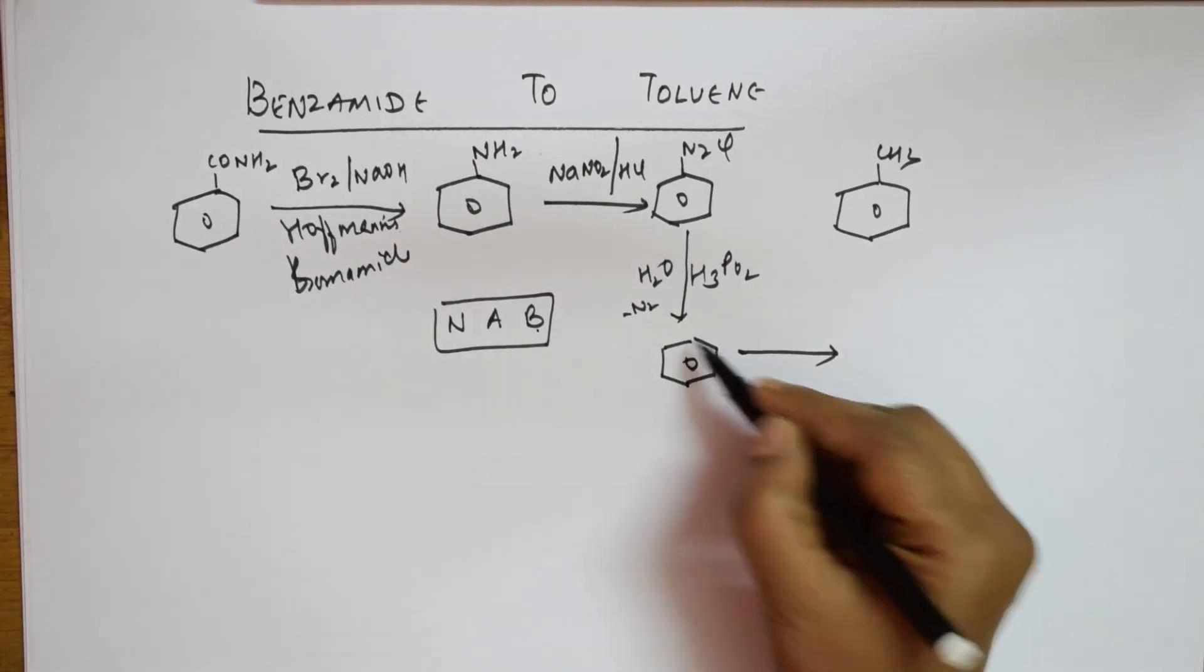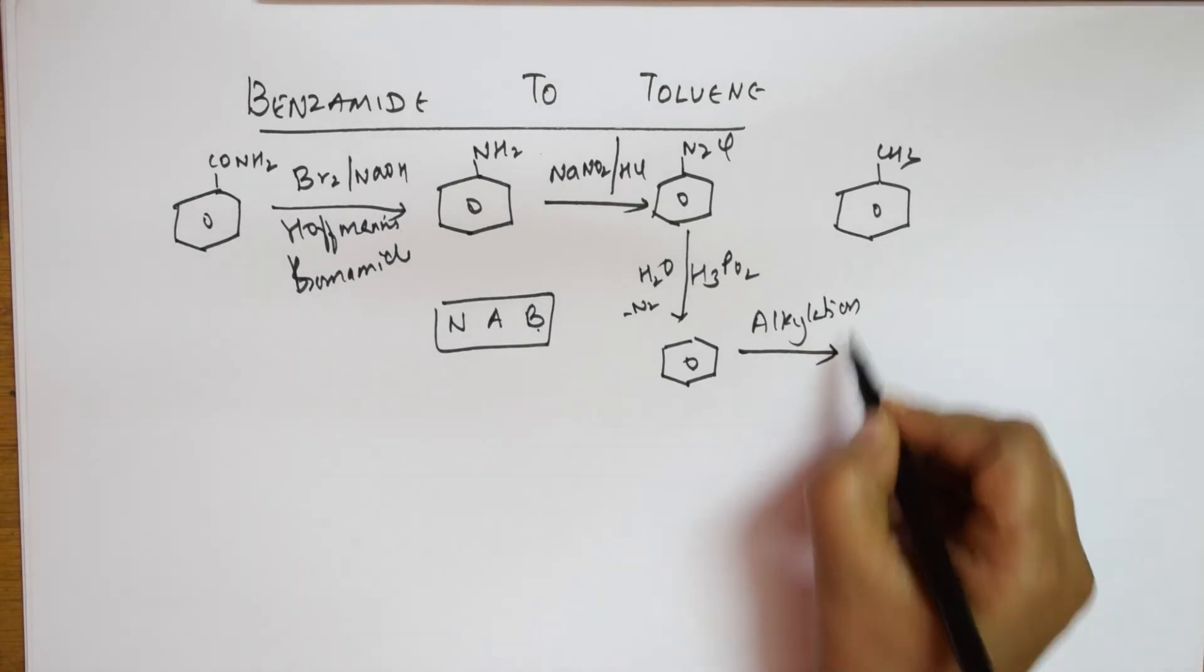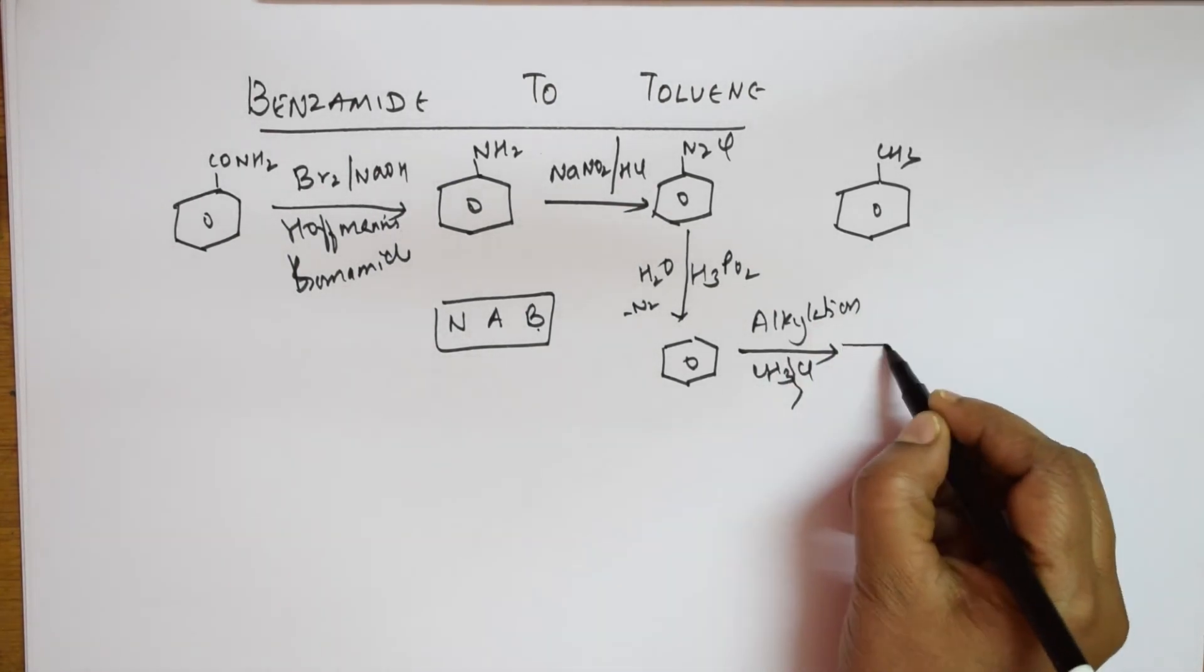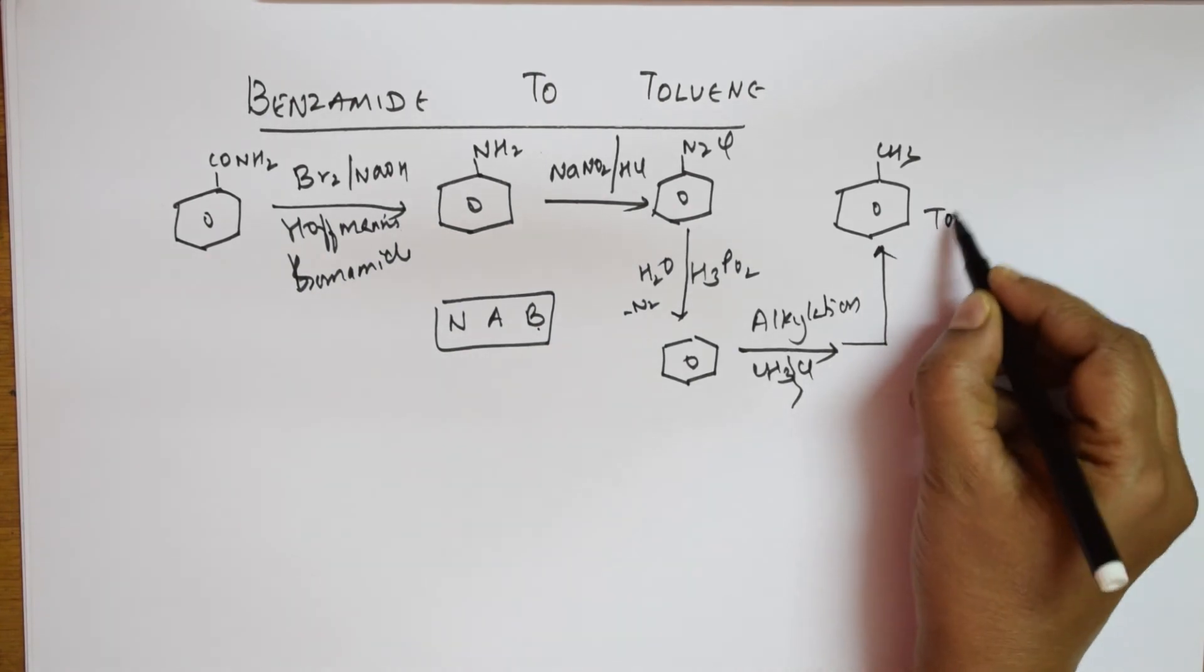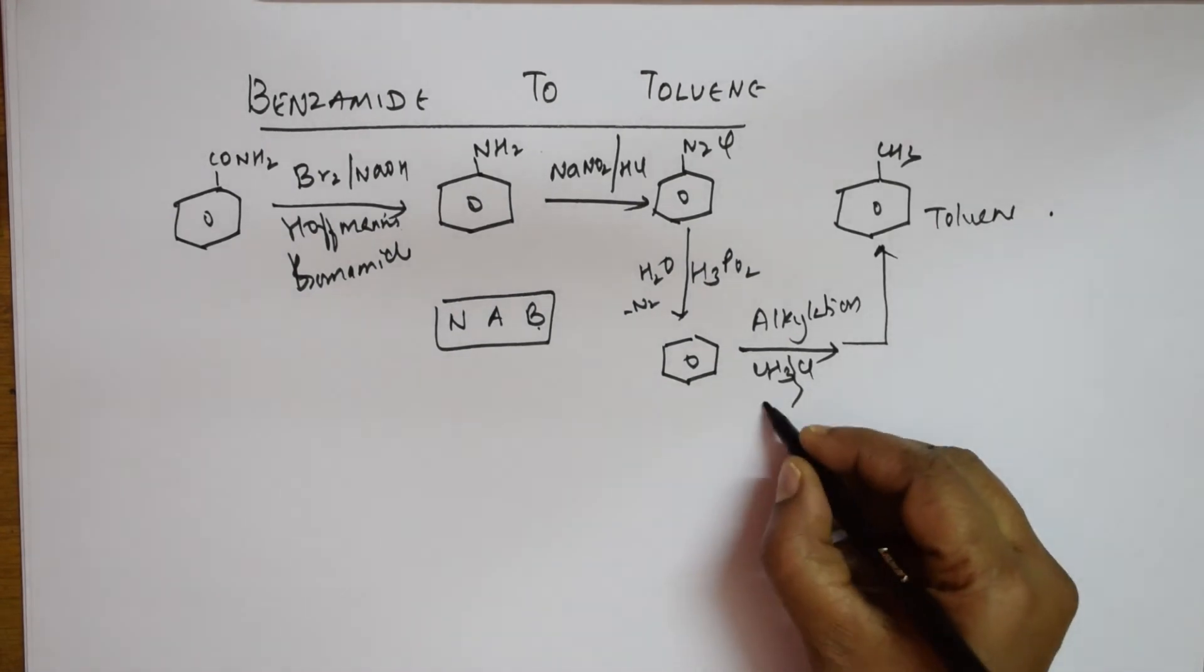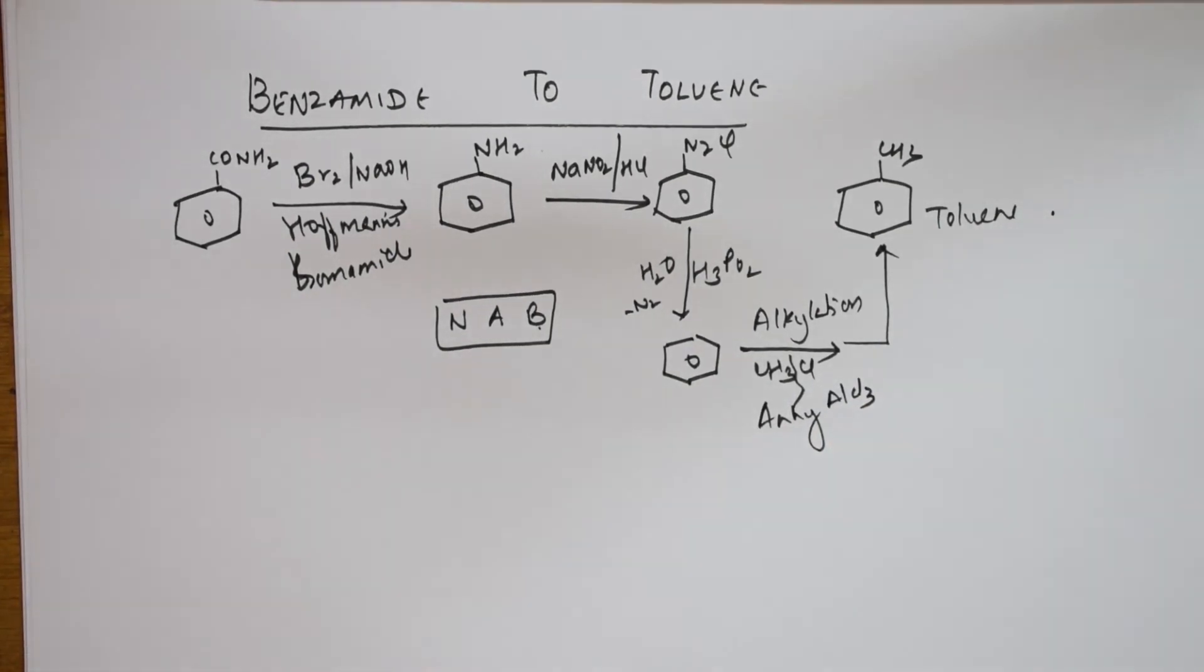I can take the benzene ring and do an alkylation reaction. Add methyl chloride CH3Cl - there's a cleavage of the bond and finally this forms toluene. For alkylation, anhydrous AlCl3 is important. This is your reaction pathway.